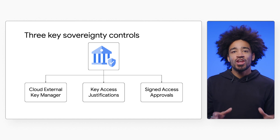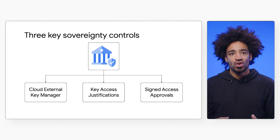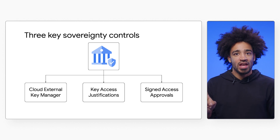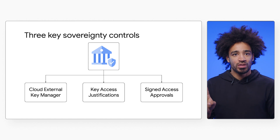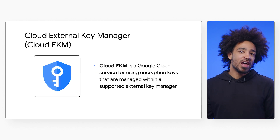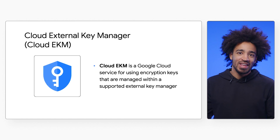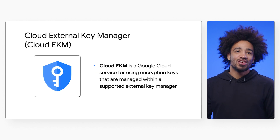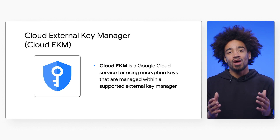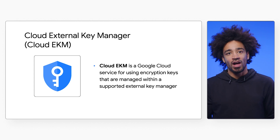This video focuses on three key sovereignty controls in Assured Workloads: Cloud External Key Manager, Key Access Justification, and Signed Access Approvals. Cloud External Key Manager, or EKM, is a Google Cloud service that allows customers to store and manage encryption keys outside of Google Cloud.